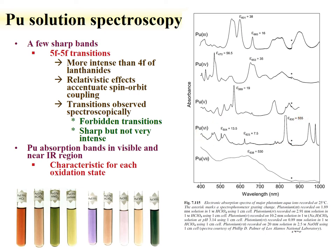There are peaks indicative of each oxidation state. For instance, plutonium-6 has an absorbance at 830 nanometers with a molar absorptivity of 555. Plutonium-4 has a peak at around 650 and another peak around 730, with molar absorptivities on the order of 35 and 60.